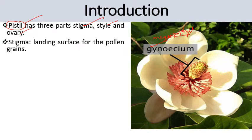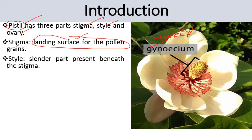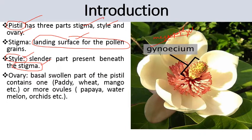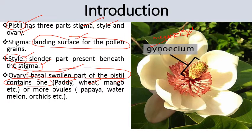The stigma is the uppermost portion and acts as a landing surface for the pollen grain — here the pollen grain settles down and germinates. Then comes the style, which helps to penetrate the pollen tube; it is a cylindrical part present beneath the stigma. Then comes the ovary, which is a basal swollen portion that bears ovules. It may contain one ovule, as in paddy, wheat, or mango, or many ovules, as in papaya, watermelon, and orchids.